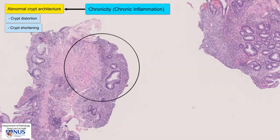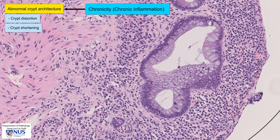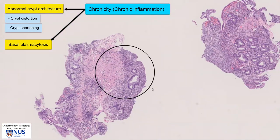Another feature of chronic inflammation that we can see here is the presence of a lot of plasma cells at the basal part of the mucosa. This is known as basal plasmacytosis. So we have seen two features of chronic inflammation, which are architectural distortion of the crypts and basal plasmacytosis.